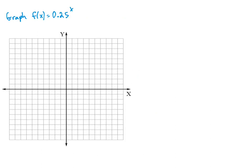Let's graph f of x is equal to 0.25 raised to the x. If we write this in a times b raised to the x form, this would be f of x equals 1 times 0.25 raised to the x. So the b value is 0.25, which is less than 1. Because this is less than 1, we would say this function is decaying or decreasing. The 1 here is the y-intercept.